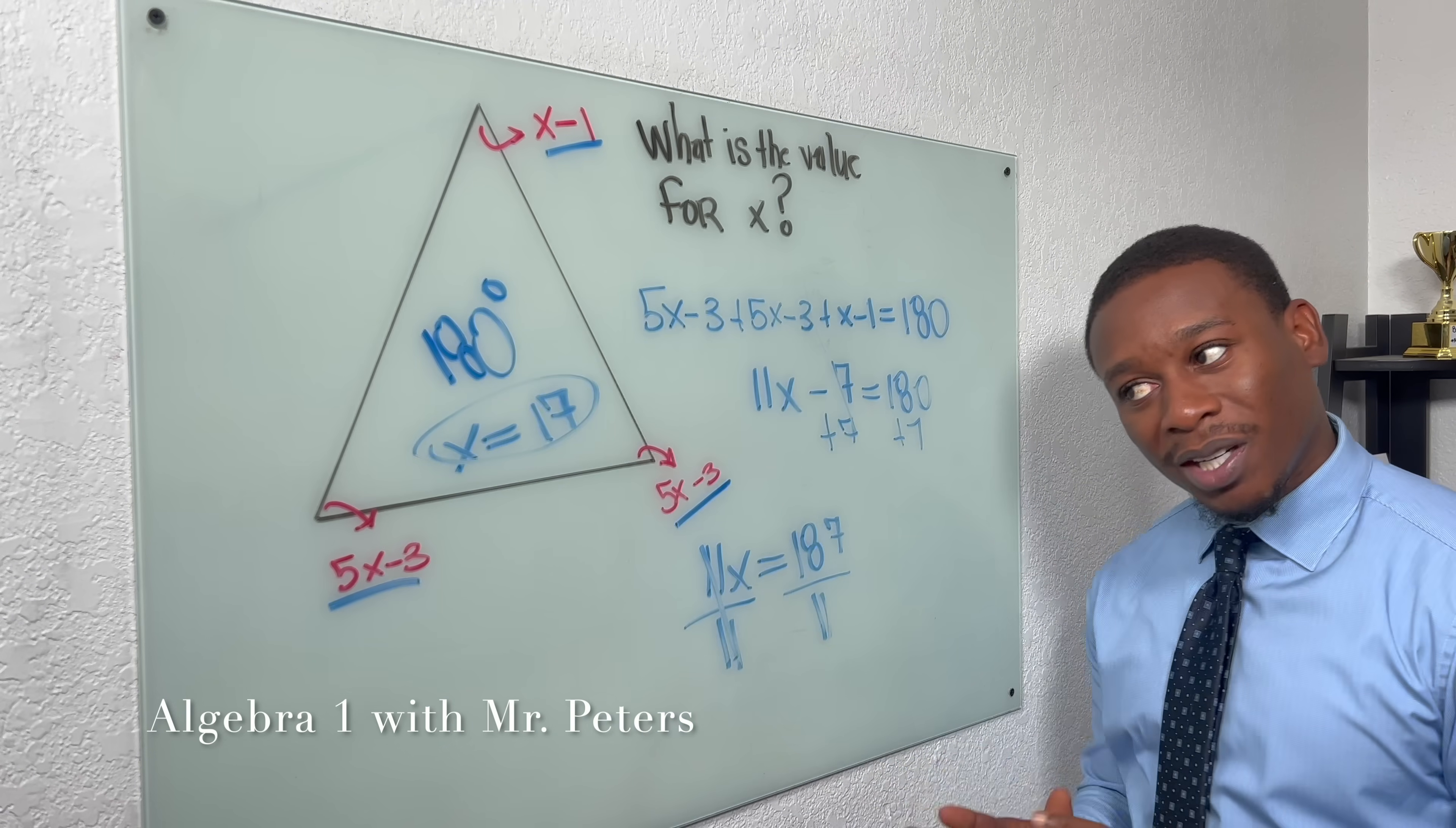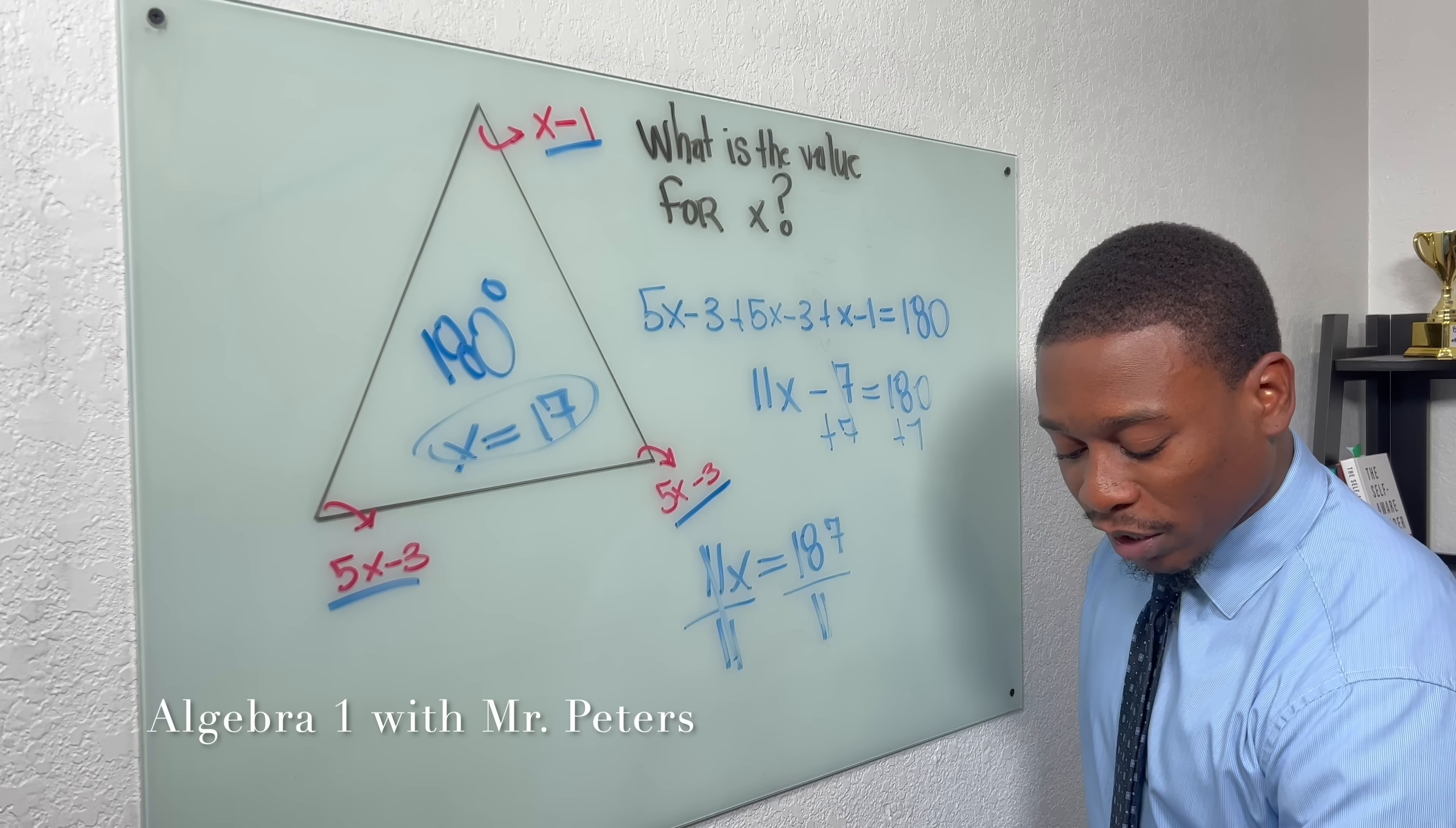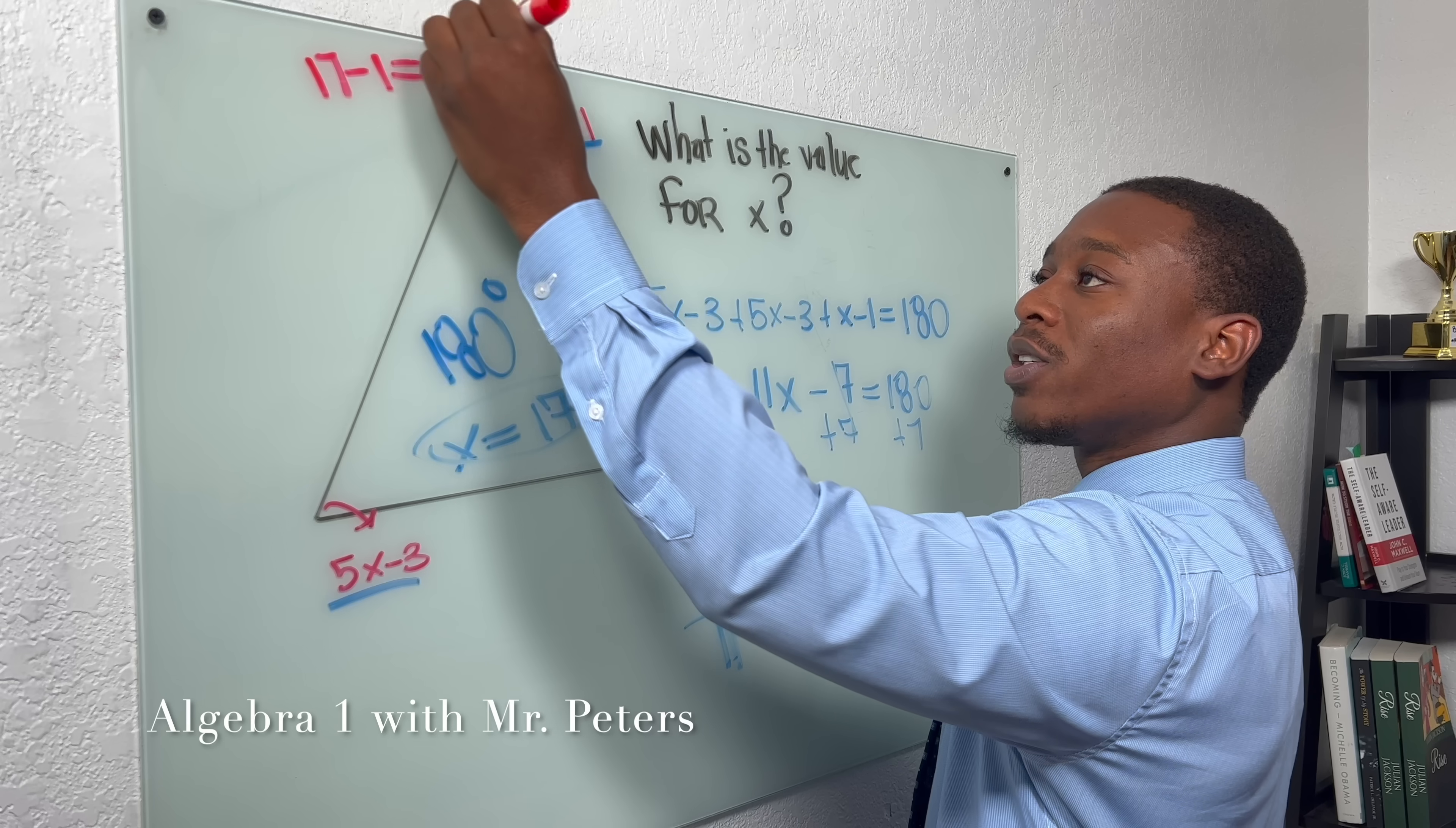But, but, but, but remember guys, that's just the value of x. We now have to plug x in and determine exactly what the angle is. So please do not forget this crucial step. So when we plug 17 up here, we're going to have 17 minus 1. So we know this top angle is 16 degrees.